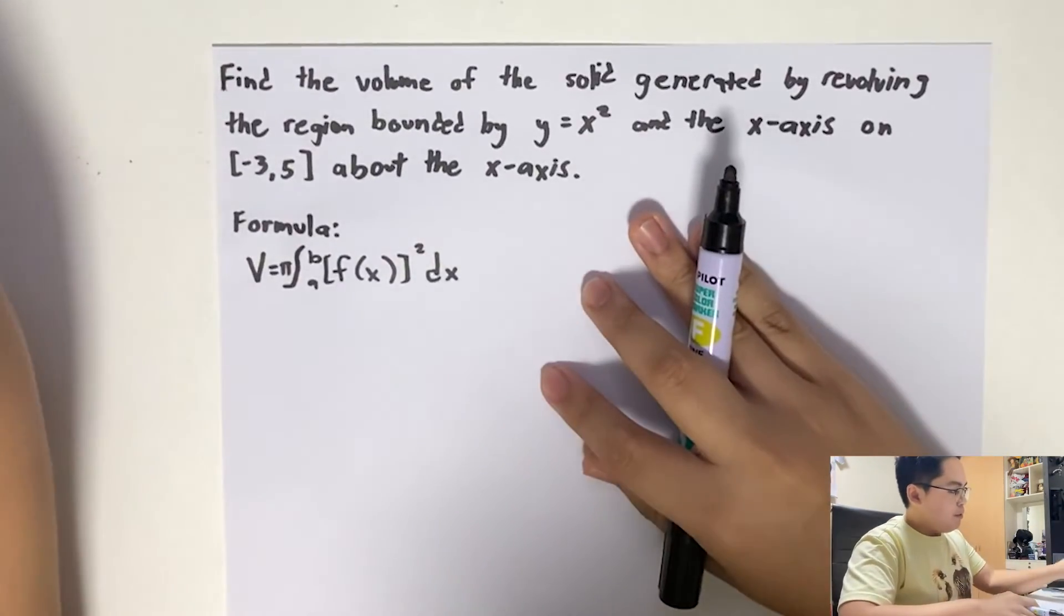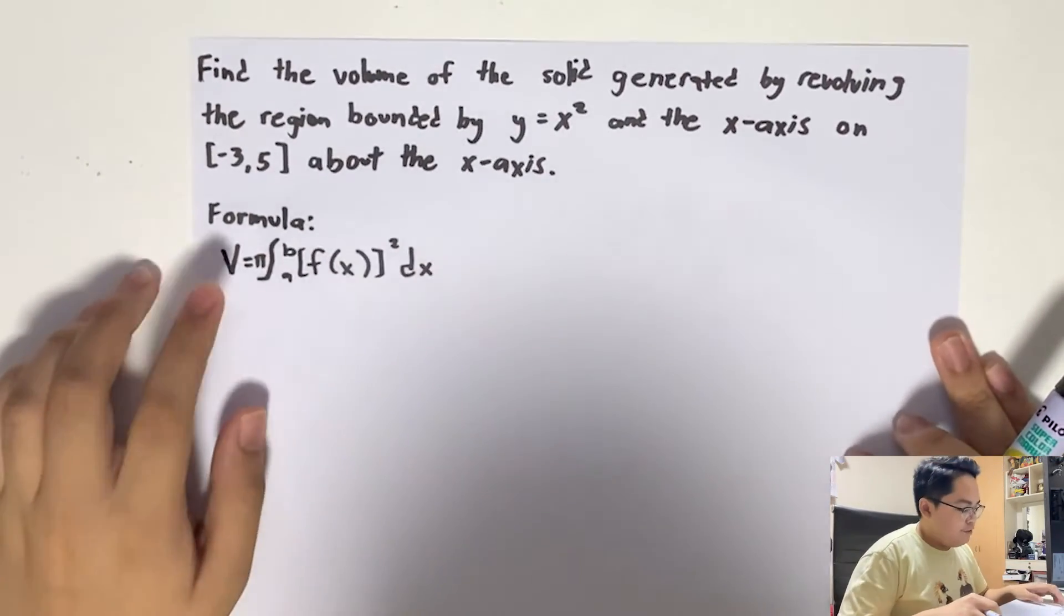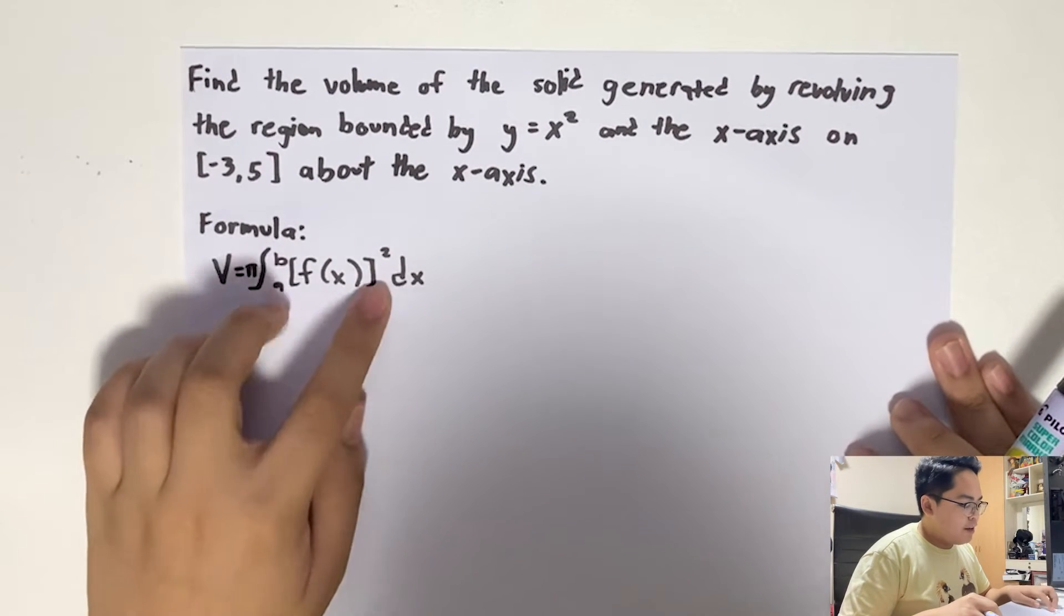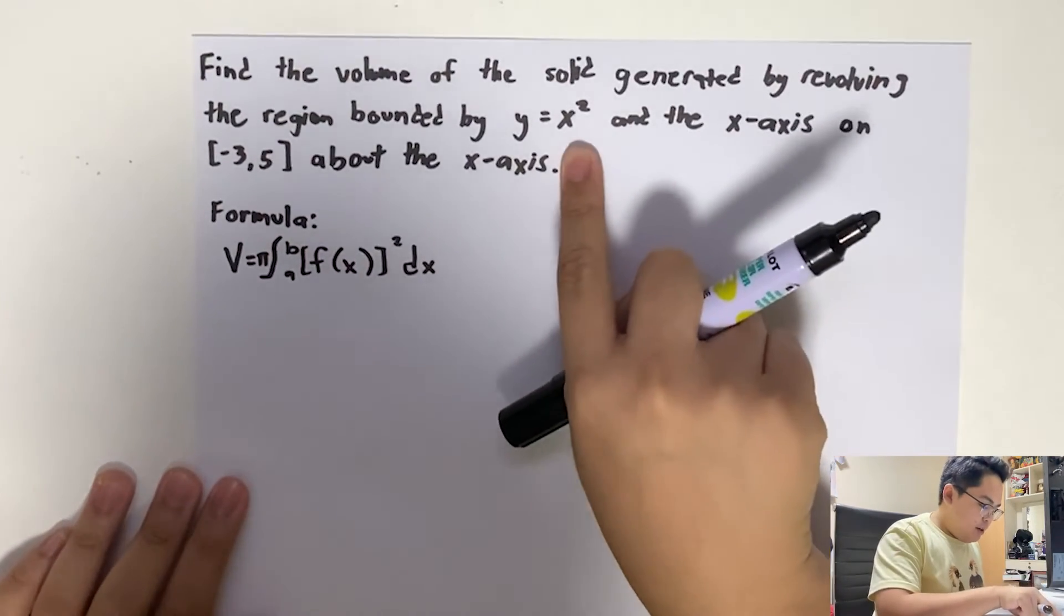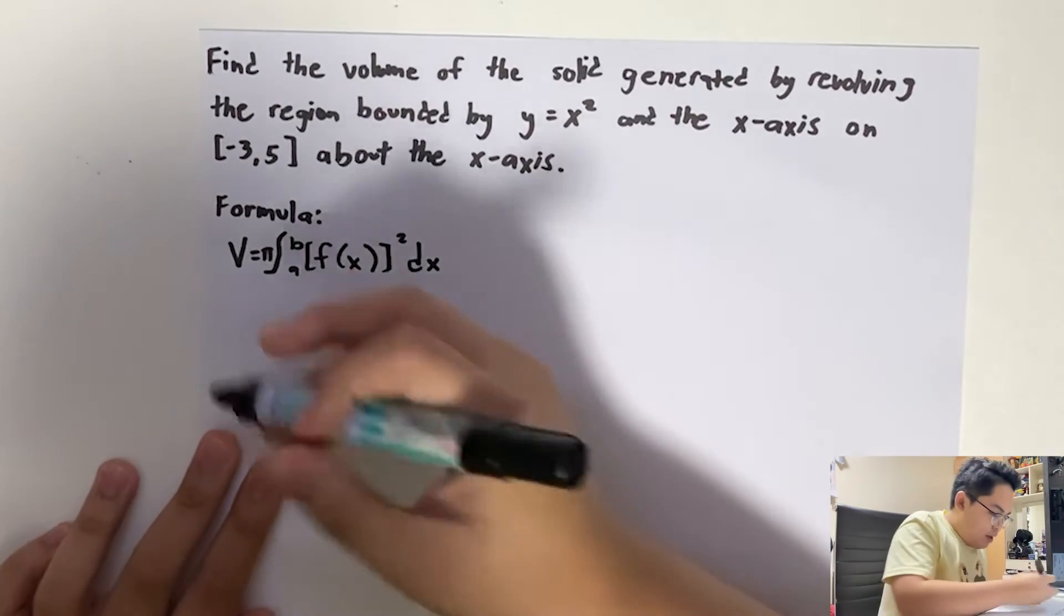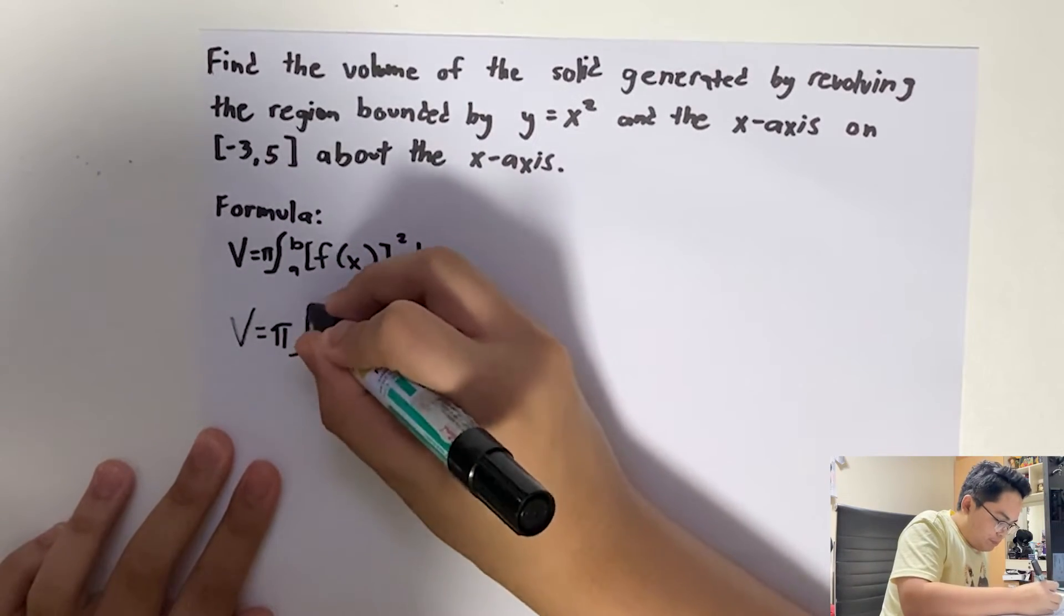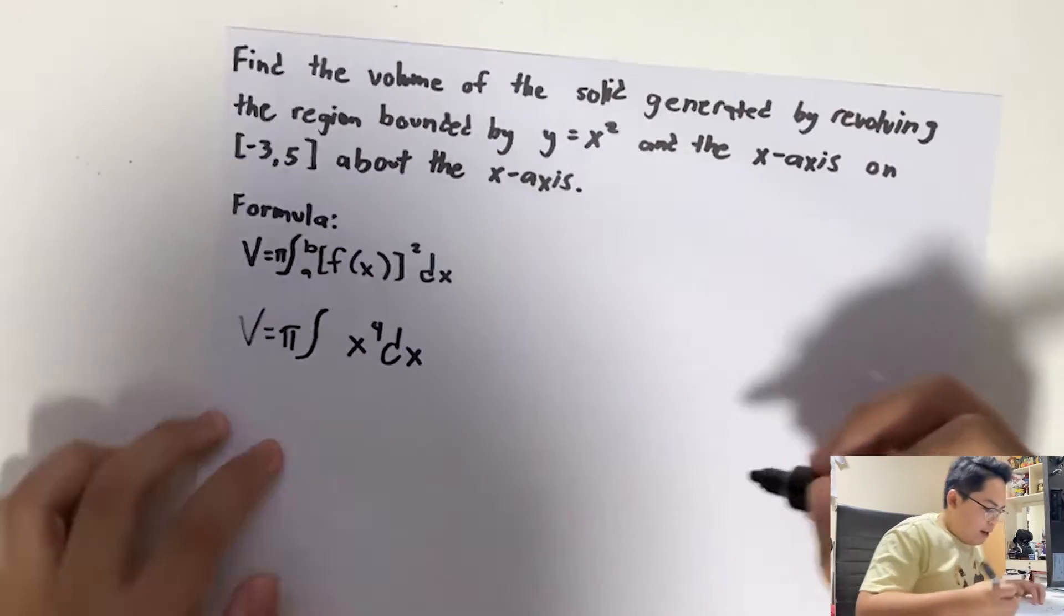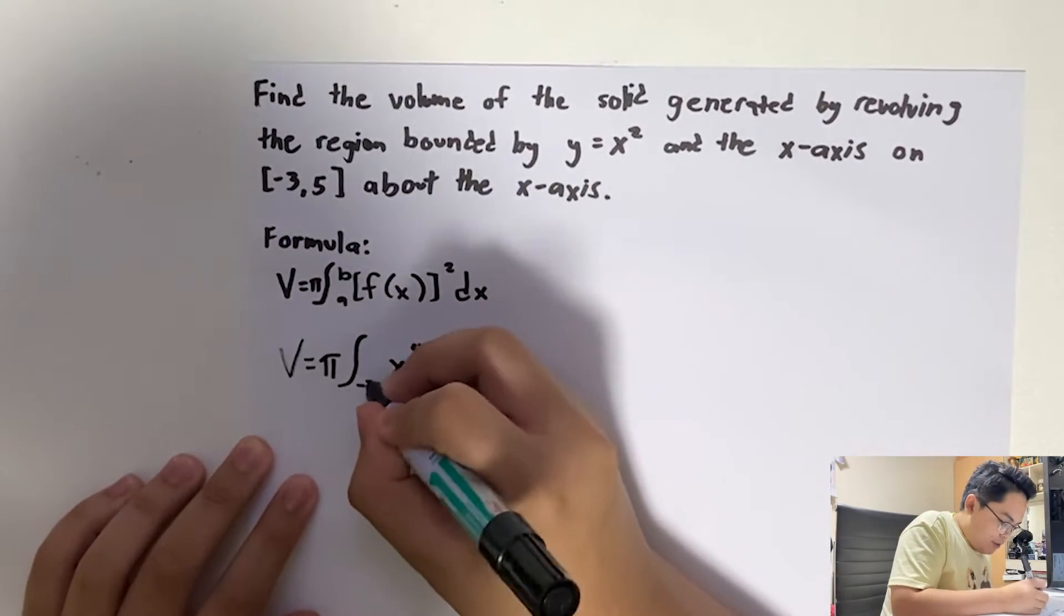So as per the formula for finding the volume of a solid of revolution, we are given the formula that the volume is equal to π multiplied by the integral of [f(x)]² from a to b. So given our function which is x², we can go ahead and replace it here. x² squared is x⁴. So π ∫x⁴ dx. And our boundaries will be the ones given in our problem, which is from -3 to 5.